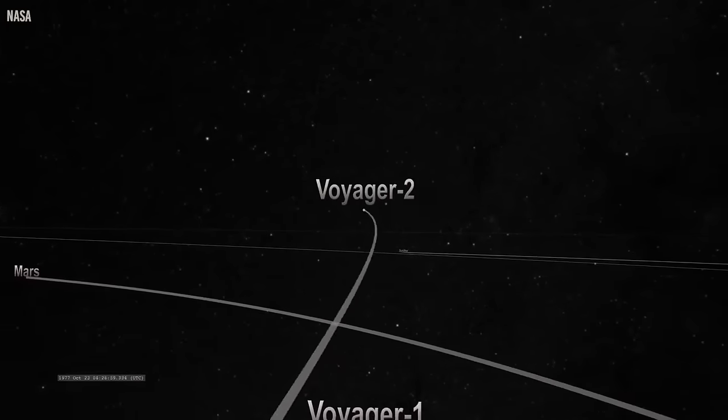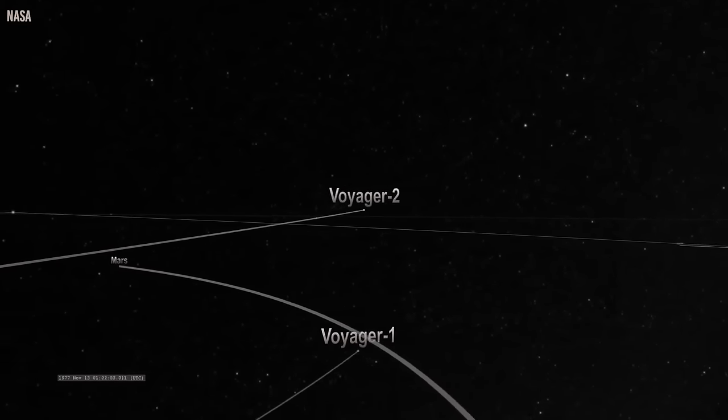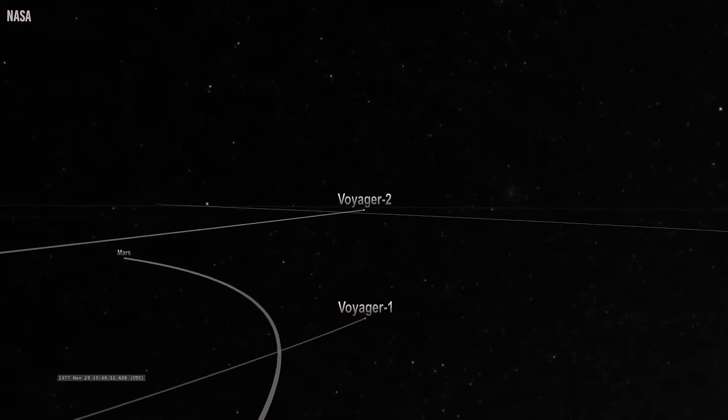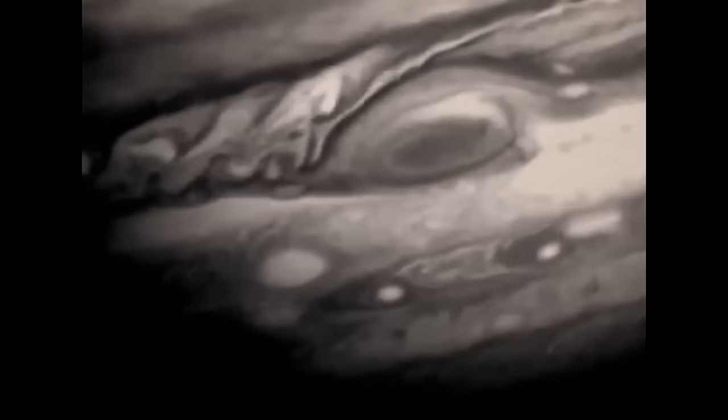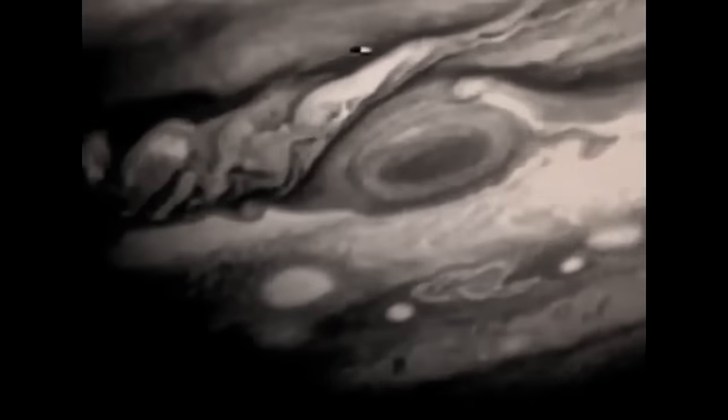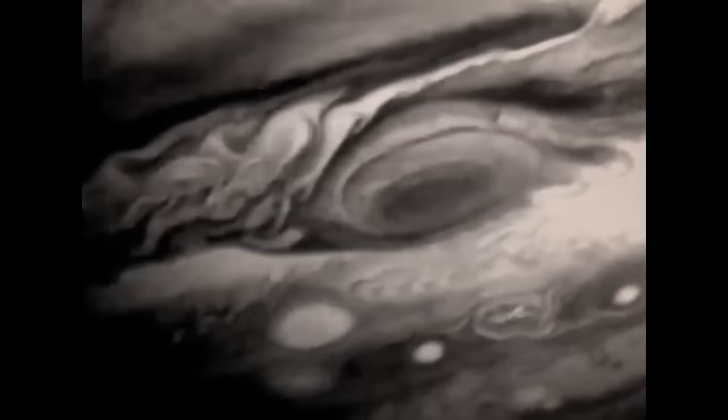Voyager 2 lost contact with Earth for seven months in 2020, among other unforeseen problems and dropouts experienced by both spacecraft. When a command accidentally turned Voyager 2's antenna in the wrong way. Last August, the mission team resorted to a last-ditch SHOUT method to get in touch with the spacecraft.